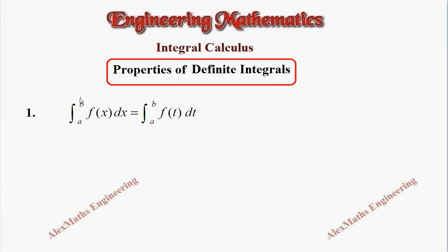First property: when we have integral a to b of f(x) dx, that can also be written as integral a to b of f(t) dt. Definite integrals are independent of the variable, so whatever is expressed in terms of x can also be written in terms of t.